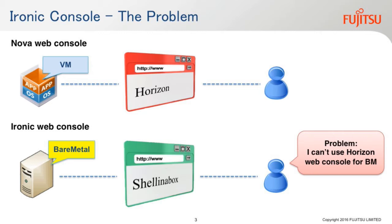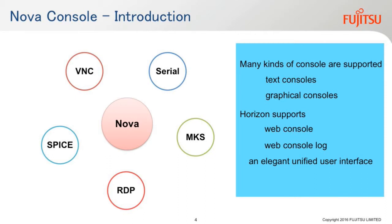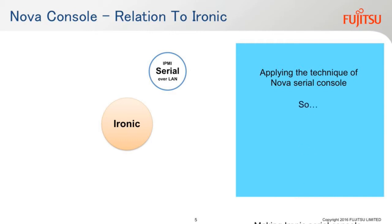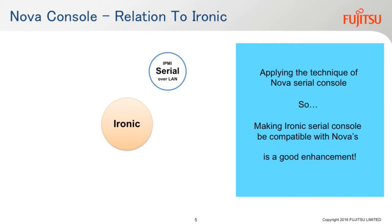Today I want to bring in some solutions to overcome the current situation — that means enhancement. In the next part, I want to give an overview of NOVA console. Currently in NOVA, it already supports many kinds of console, including text console and graphical console. On the other hand, Horizon also supports the web console with an elegant unified user interface. In the case of Ironic, currently it supports the shell IPMI shell overlay for web console by applying the technical NOVA shell console. So making Ironic serial console compatible with NOVA is a good enhancement.